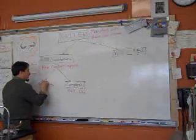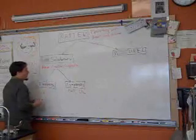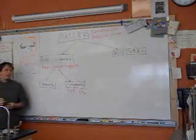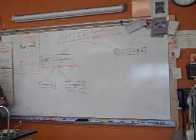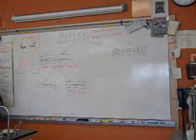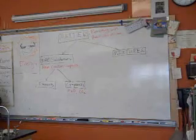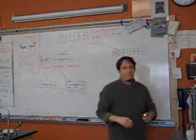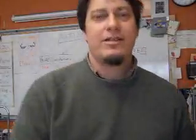Compounds is one. Elements is the other. Now, elements are the most basic type of matter that still has properties of matter. The table over there, the periodic table of the elements. Let's have a look over there, shall we? There we go. Periodic table of the elements.